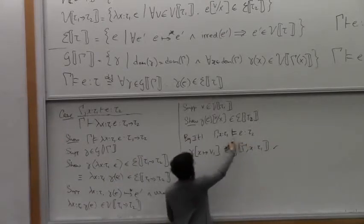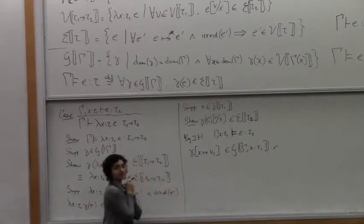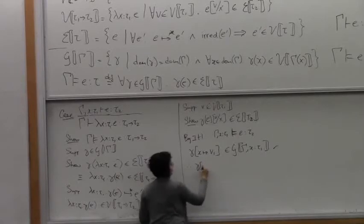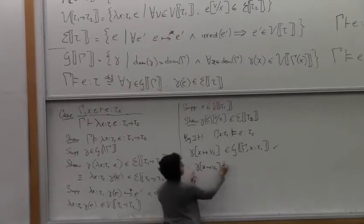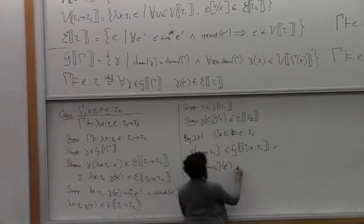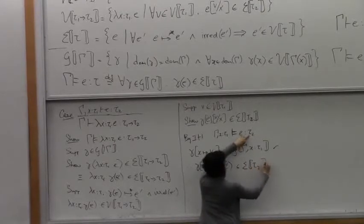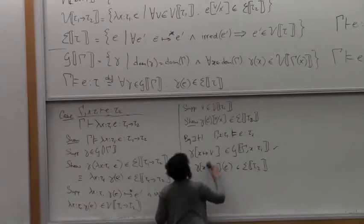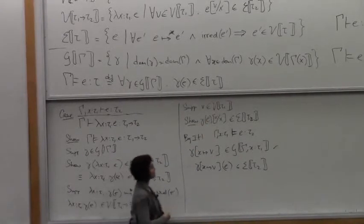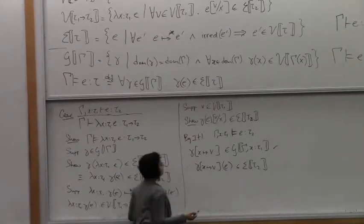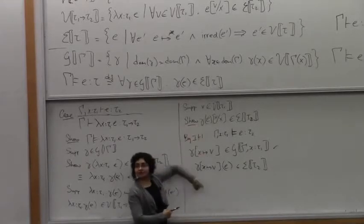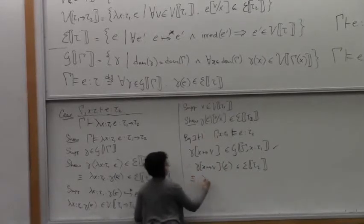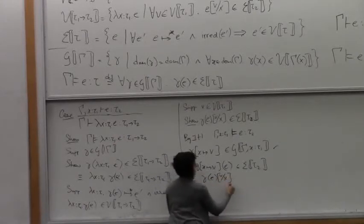So we have this fact. We instantiate this with this gamma. We know it belongs to G of the extended environment. Therefore, we can immediately conclude that if we take the substitution gamma with x maps to v1 and apply it to this expression, that belongs to E of tau 2. And this is what we wanted to show. So this expression is just equivalent to that — we do gamma E and then substitute v for x. So we're done.